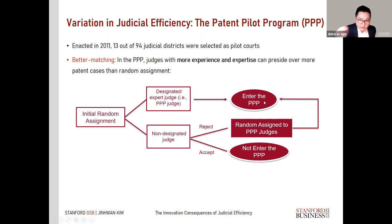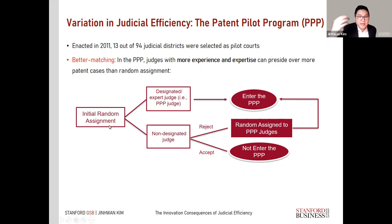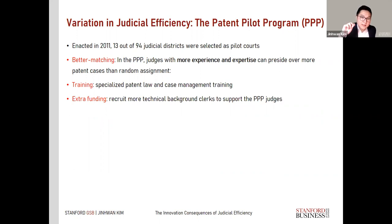If a case is assigned to an expert judge, they handle it as such. On the other hand, non-designated judges in these 13 districts may get an assignment and can either accept it even though they are not patent experts, or reject it, in which case it is reassigned to one of the other PPP judges in that same district. Unlike the other 81 districts that continue with complete random assignment, these 13 courts now have a higher mechanical probability of having cases assigned to an expert.